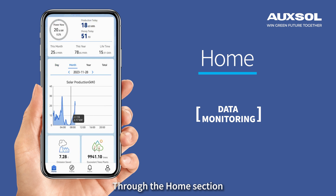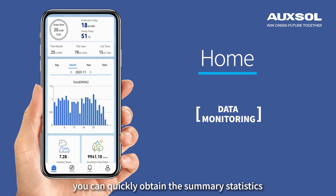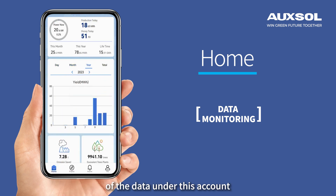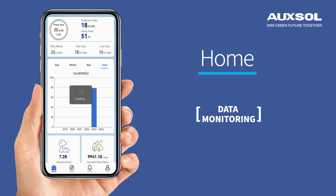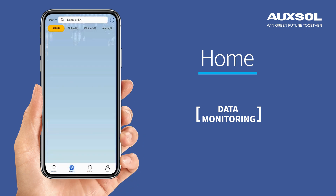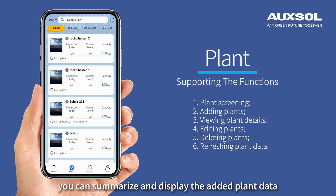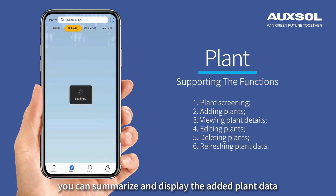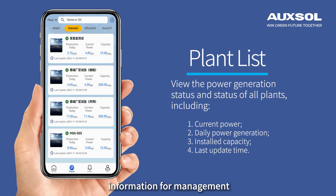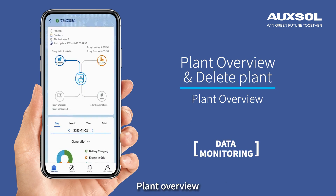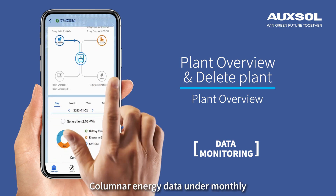Through the home section, you can quickly obtain the summary statistics of the data under this account. In the plant list module, you can summarize and display the added plant data information for management, including plant overview and power curve data.